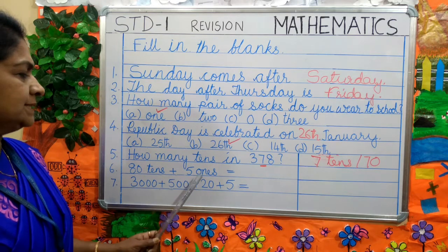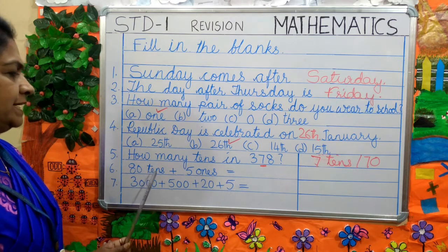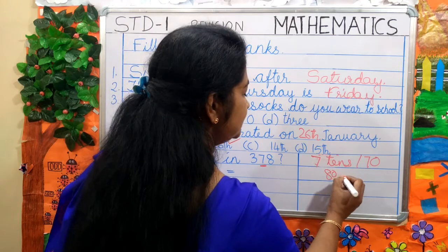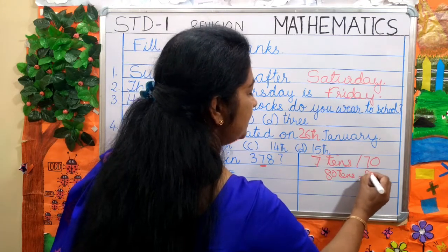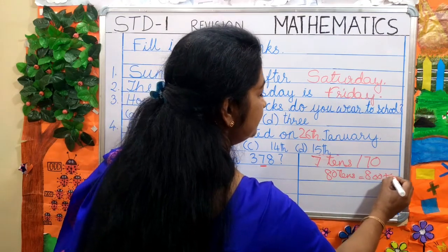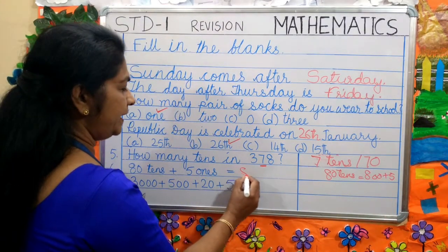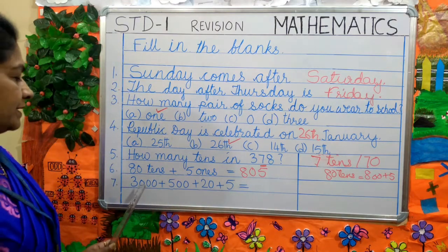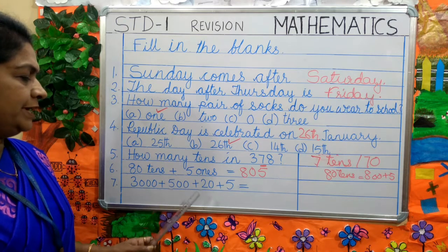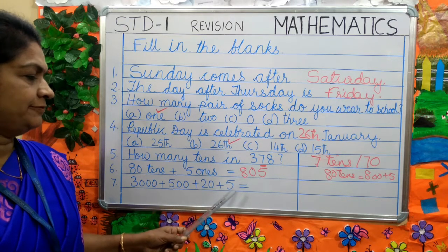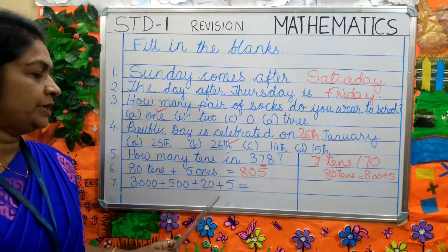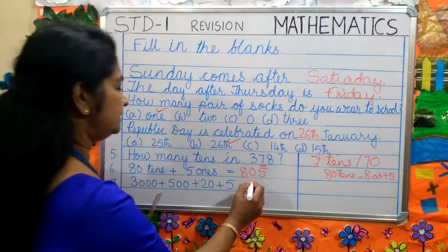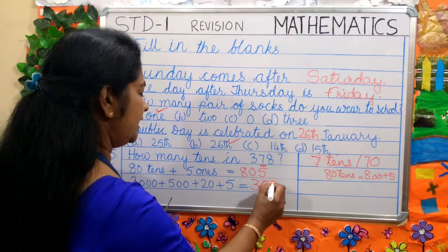Next one: 80 tens plus 5 ones. 80 tens means how much? 80 tens is equal to 800, plus 5. So the answer will be 805. The last one: 3000 plus 500 plus 20 plus 5. It is written in expanded form. We have to write in short form. The answer will be 3525.